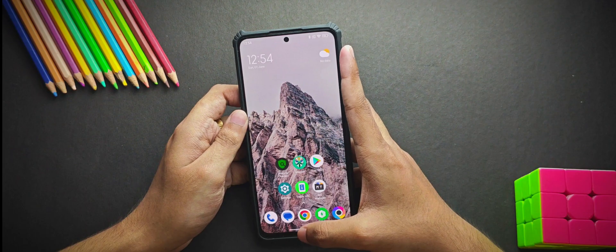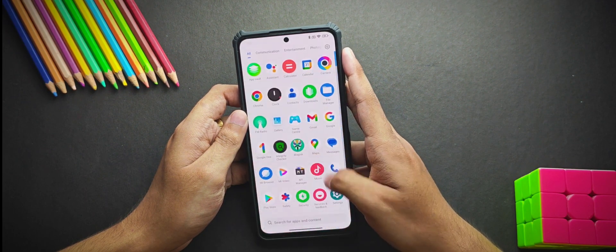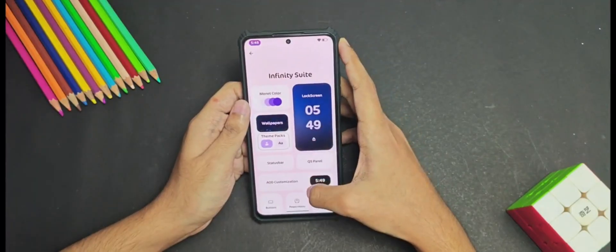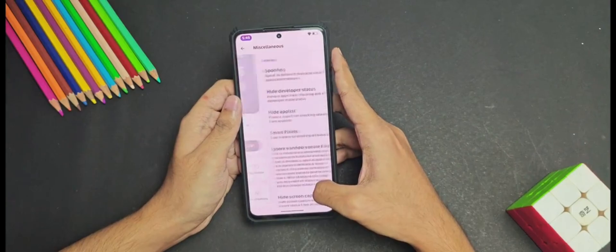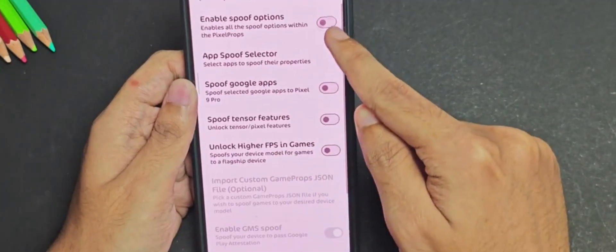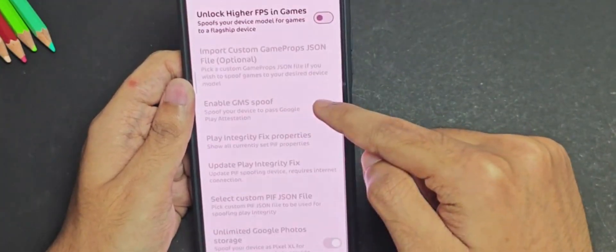First thing you need to do is disable all the spoofing features if your ROM has any of them. Last time I was on the Infinity X ROM and I disabled all the spoofing features. So if your ROM has any of them make sure to disable it first.